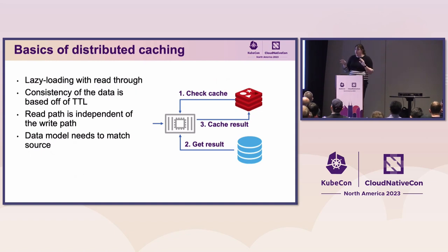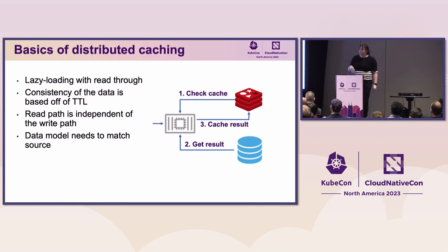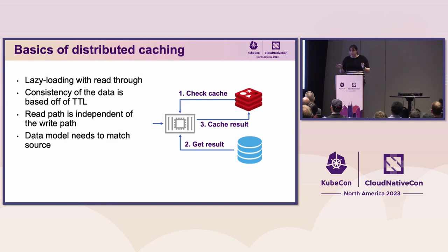Most people, when they use caching, start with lazy loading and read-through. The idea is you have a query to a backend database, you first check if it's in a cache like Redis, and if it's not, you go check the backend database and pull the data back through. Data eventually gets invalidated via a TTL — Redis has native support for TTLs, as do all major caching engines. One important thing to highlight is the independence of the read and write path. This is often important for microservice architectures because they follow Command Query Responsibility Segregation — you want independent writes and reads so they can scale independently. With lazy loading, everything is on the read path, which is great.